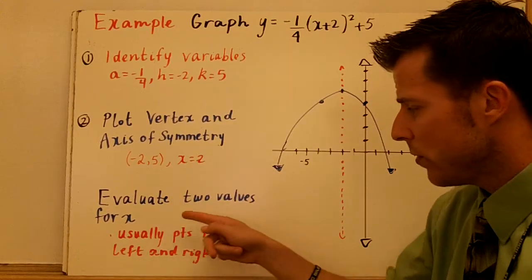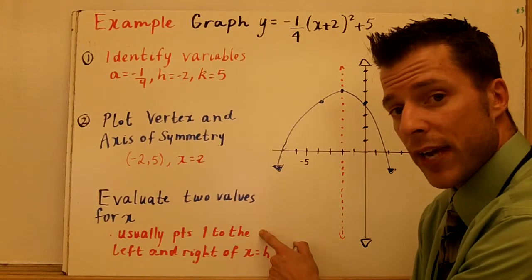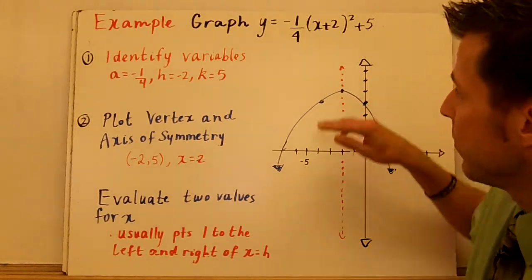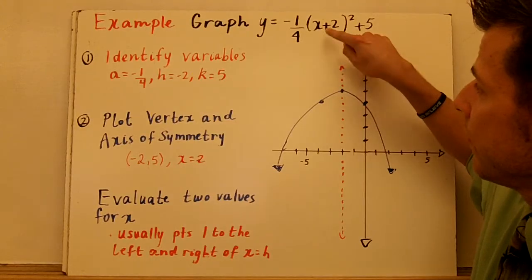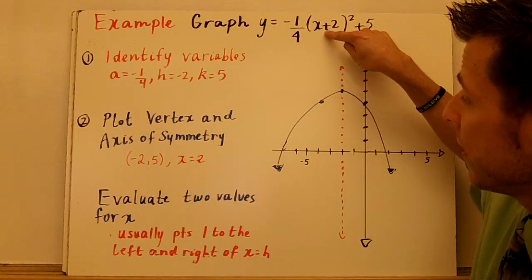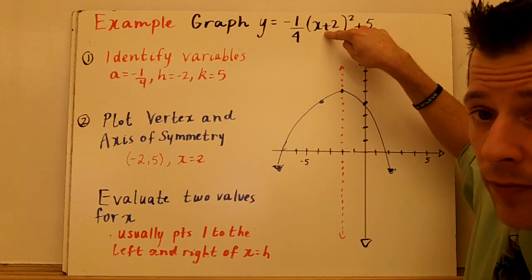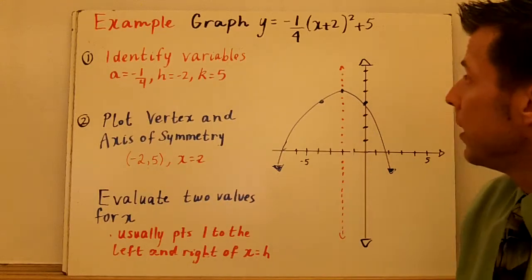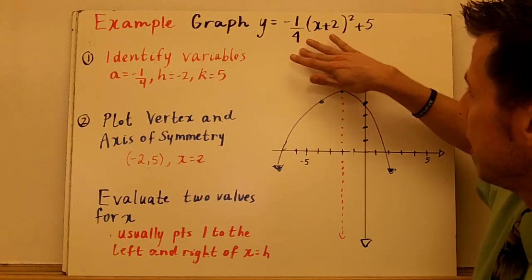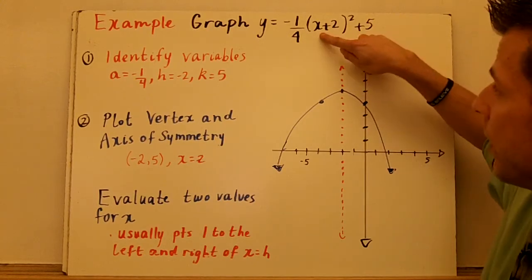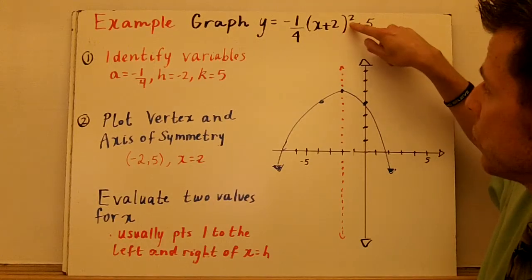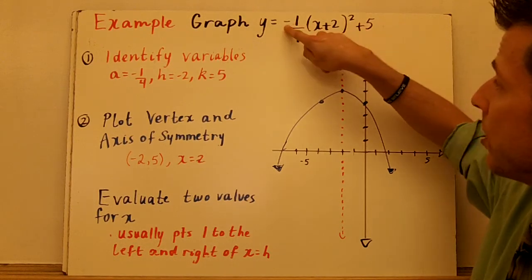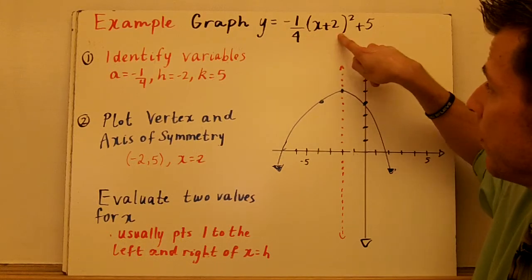Now, evaluate two values for x. Usually, evaluate points that are 1 to the left and 1 to the right of your axis of symmetry. Because if you plug those in, you will get a value of 1. So if I always pick a value that's 1 to the right and to the left of my axis of symmetry, when I simplify here and square it, I'll get 1. Now, because I have this fraction, it can be a little more challenging. So I'm actually going to use 0. Because when I put 0 in here, I get 2 squared, which is 4. Negative one-fourth of 4 is 1, and it's going to be the opposite. So negative 1 plus 5 is 4.